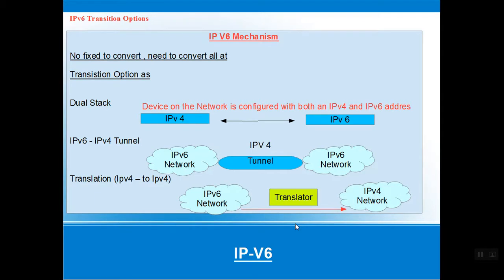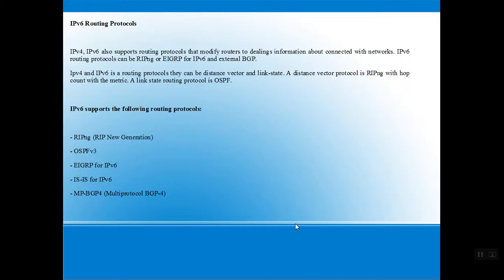The IPv6 transition mechanisms include: dual stack — supporting both IPv4 and IPv6 on each device; tunneling — encapsulating IPv6 traffic through IPv4 networks; and translation — converting between IPv6 and IPv4. As seen in the diagram, the dual stack combines IPv4 and v6, the tunnel carries IPv6 using IPv4, and the translator handles IPv6-to-IPv4 conversion. This is the basic mechanism of IPv6 transition.